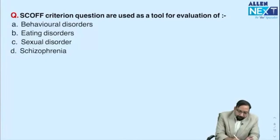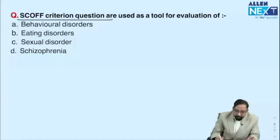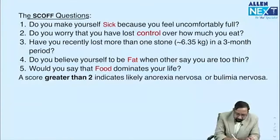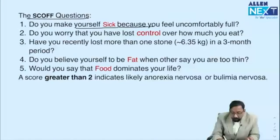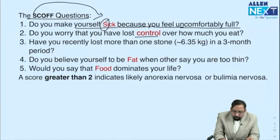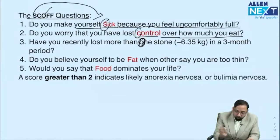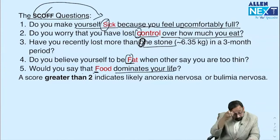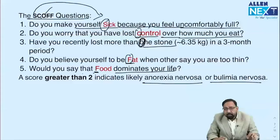Next repeat question: SCOFF criteria, a questionnaire used for eating disorders. The five questions are: Do you make yourself Sick? Do you worry about loss of Control? Have you lost more than One stone in three months? Do you believe yourself to be Fat? Does Food dominate your life? A score of more than two suggests anorexia nervosa or bulimia nervosa.